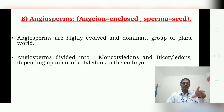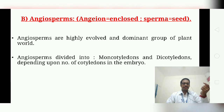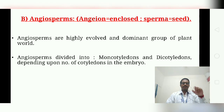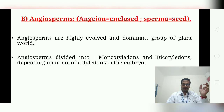The androecium has anthers containing pollen grains. Pollen grains are spread by various agents — insects, birds, wind, or human activity — and are stuck onto the stigma. The fertilized ovary then develops into a fruit.